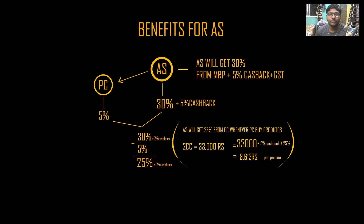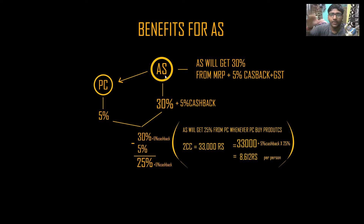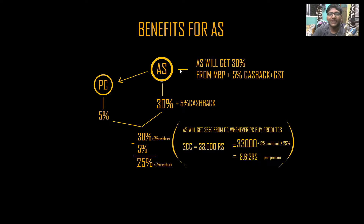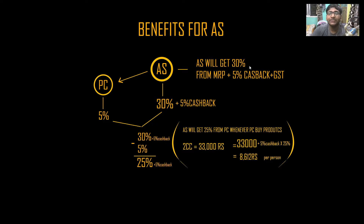Alright guys, you can see many calculations on screen. We are going to learn the benefits for AS. You can see here we have AS, made because with the help of our six customers. So AS will get a 30% discount from MRP. As a regular member, MRP discount is only 5%, but AS will get a 30% discount. Plus, 5% cashback as well.